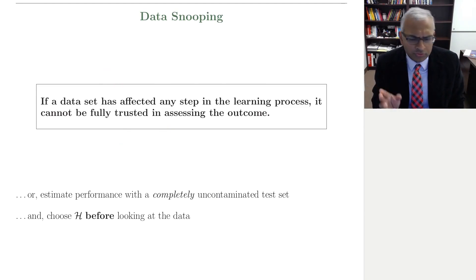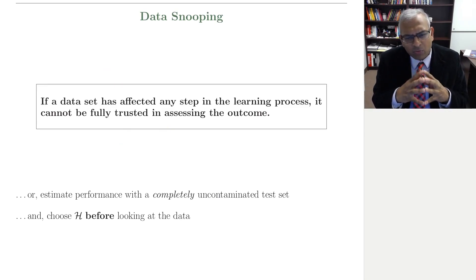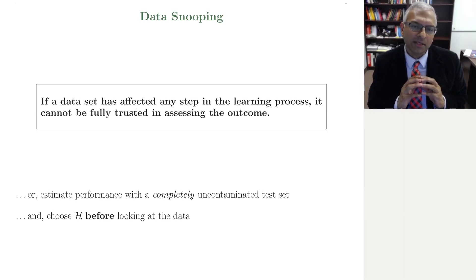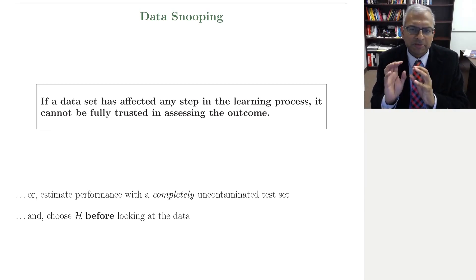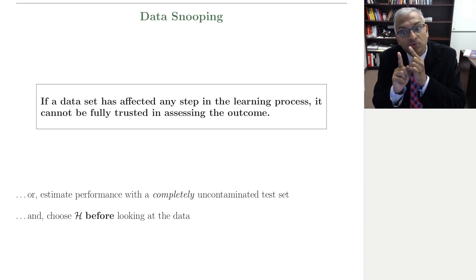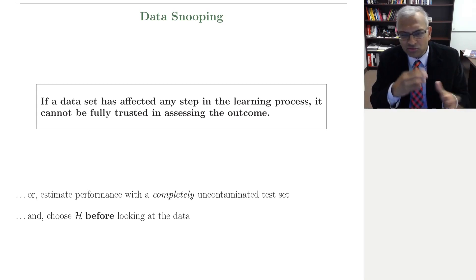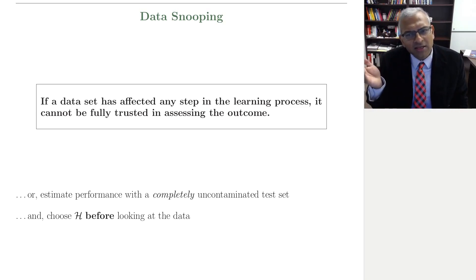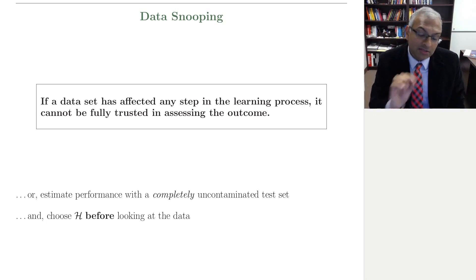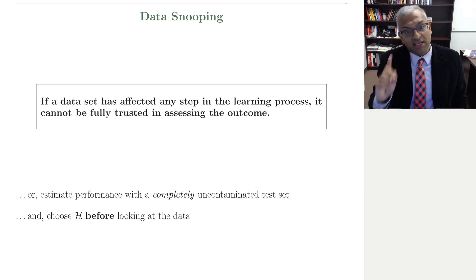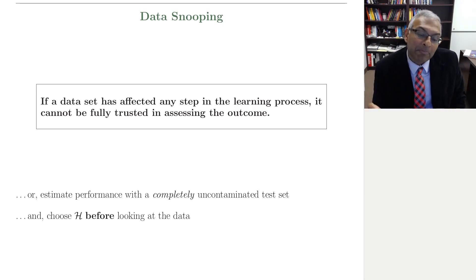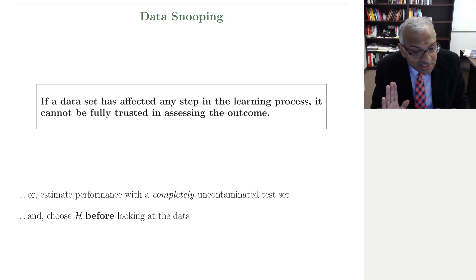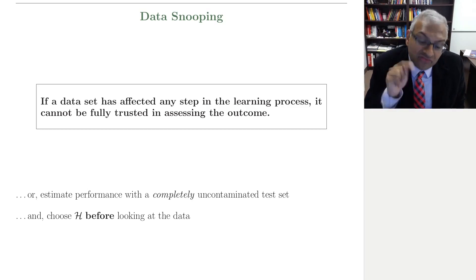To do so, we have to re-examine why we have data — why is data so fundamental to machine learning from data? Data really has two purposes: the first is to learn through, and the second is to assess. Data snooping is usually occurring when these two get irretrievably mixed together, and you think that your assessment is good, but it's not. The principle is: if the data has affected any step, any choice in the learning process, then the data cannot be trusted in assessing the outcome of that process.